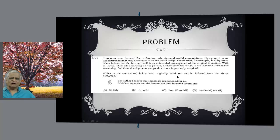Which of the statements below are logically valid and can be inferred from the above paragraph? Author believes computers are good for us or not good for us. Mobile computers and the internet are both intended dimensions. There are four choices. One of them is correct. Three of them are wrong.